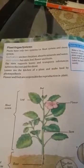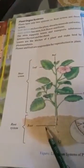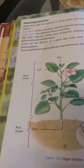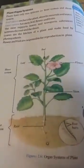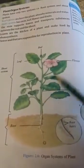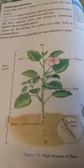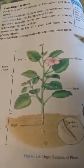Now we will read about plant organ systems. Plants have only two systems: the root system and the shoot system. The root system anchors the plant and absorbs minerals and water from the soil. The shoot system consists of the stem, leaves, flowers, buds, fruits, etc. This system supports the leaves and transports substances between the roots and shoot.